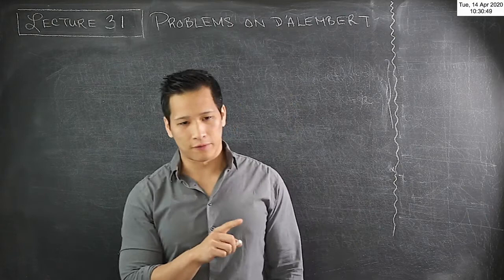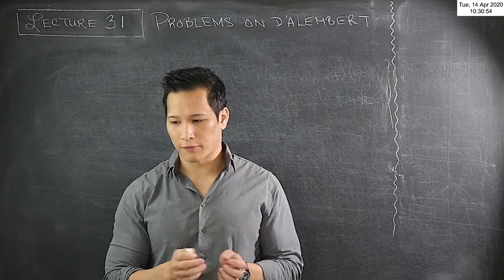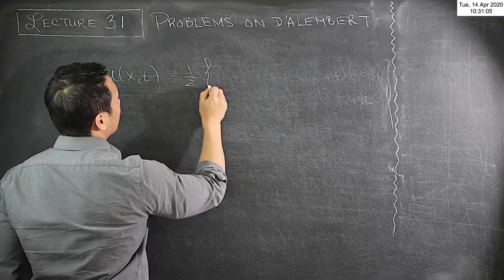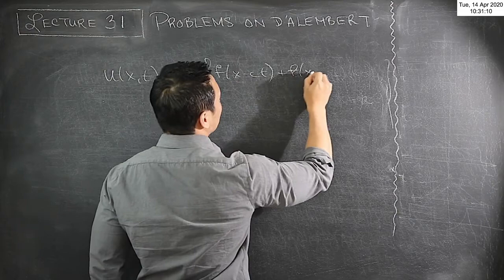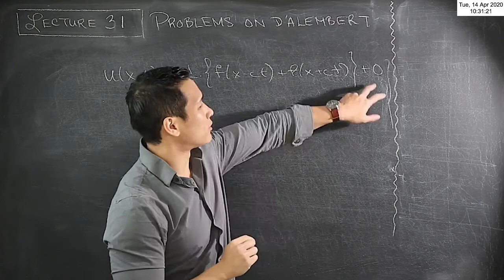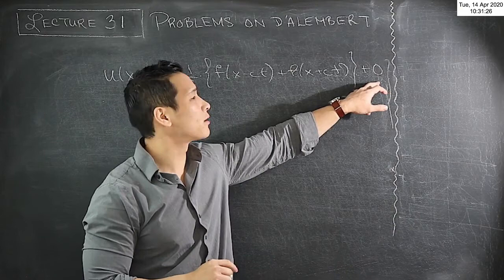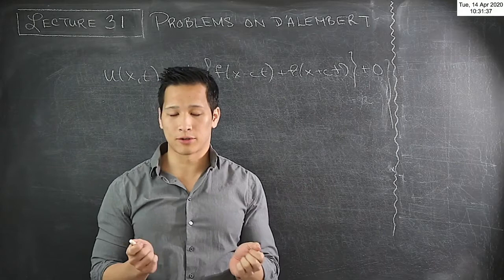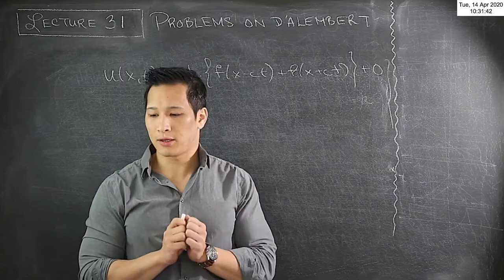Last week we learned about D'Alembert's solution of the wave equation, which is valid for the infinite interval. This moves us from Fourier series to waves on infinite intervals. The solution u(x,t) can be written as half of f(x minus ct) plus f(x plus ct), plus a 1 over 2c times an integral from x minus ct to x plus ct of a g function, corresponding to the initial velocity. For all practical sketching problems in this course, we assume the initial velocity is zero.